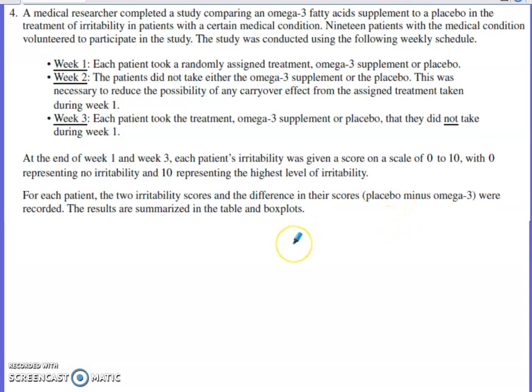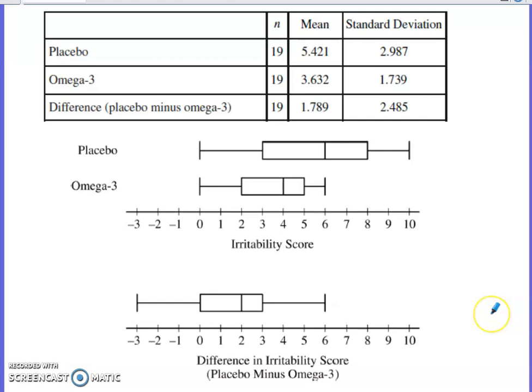For each patient, the two irritability scores and the difference in their scores, placebo minus omega-3, that's important for what we do in a little bit, we're going to be recorded. The results are summarized in the table and box plots. So here those are.